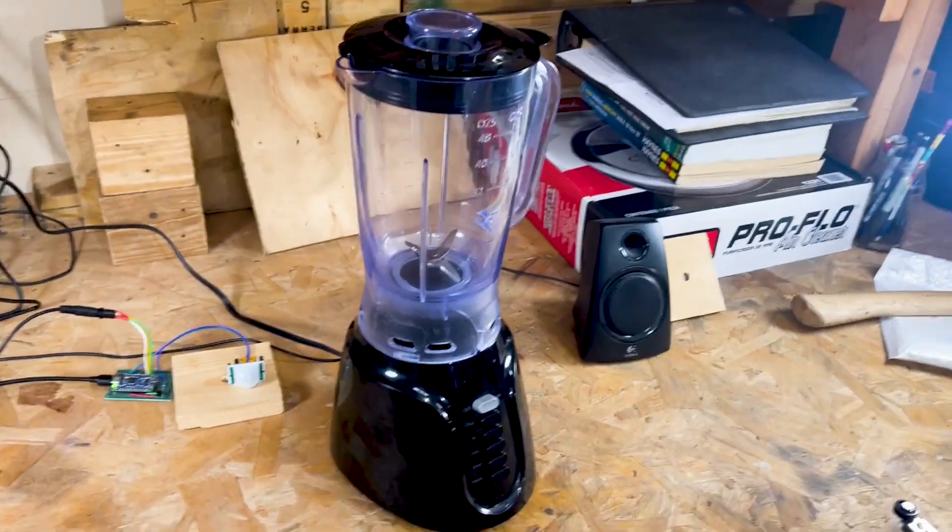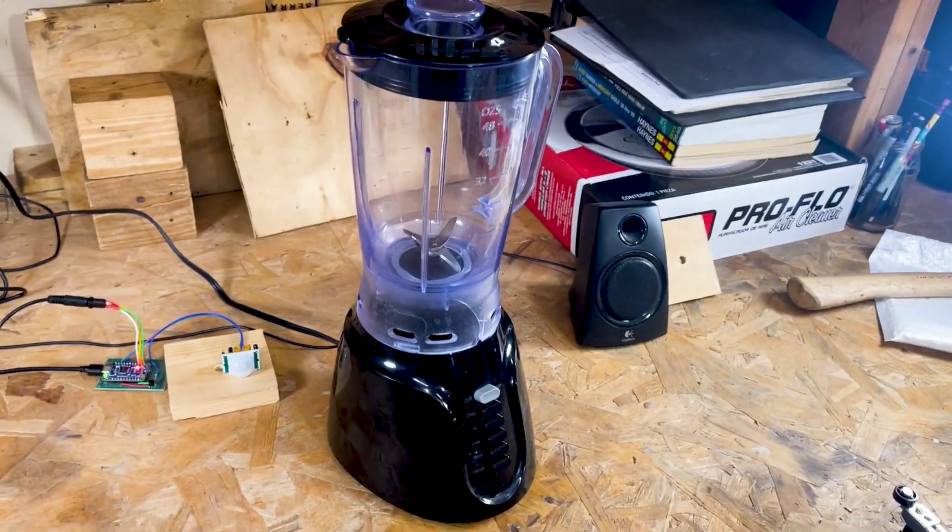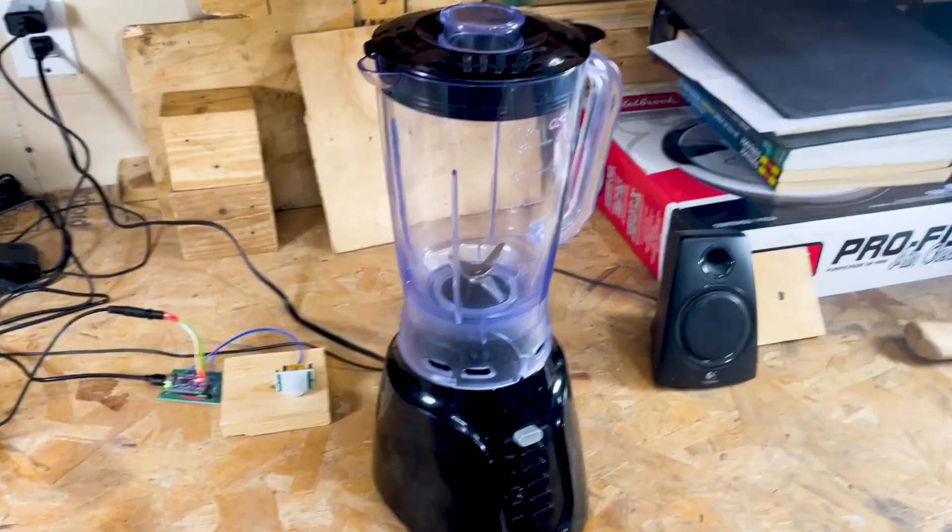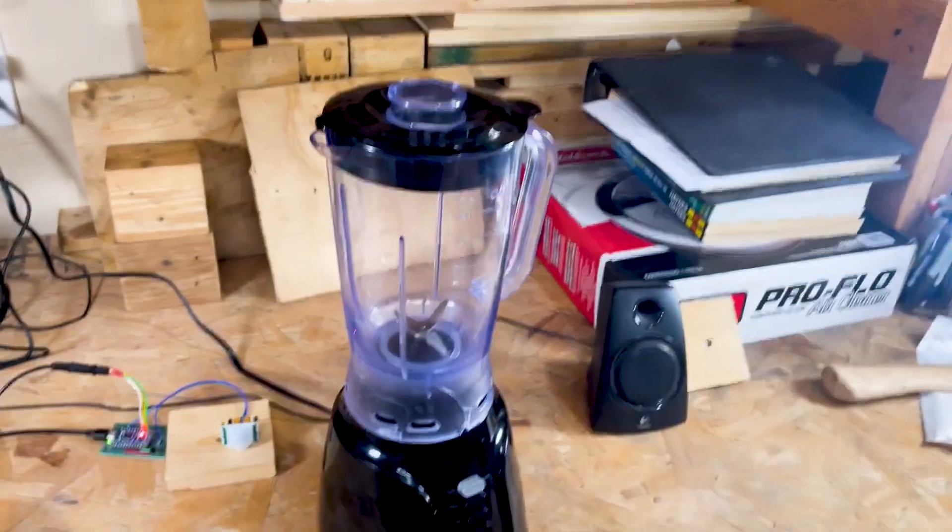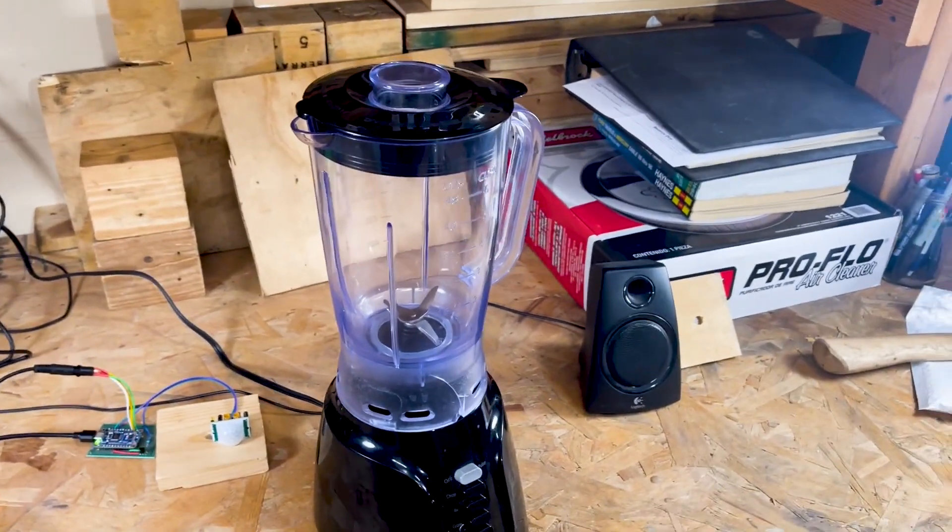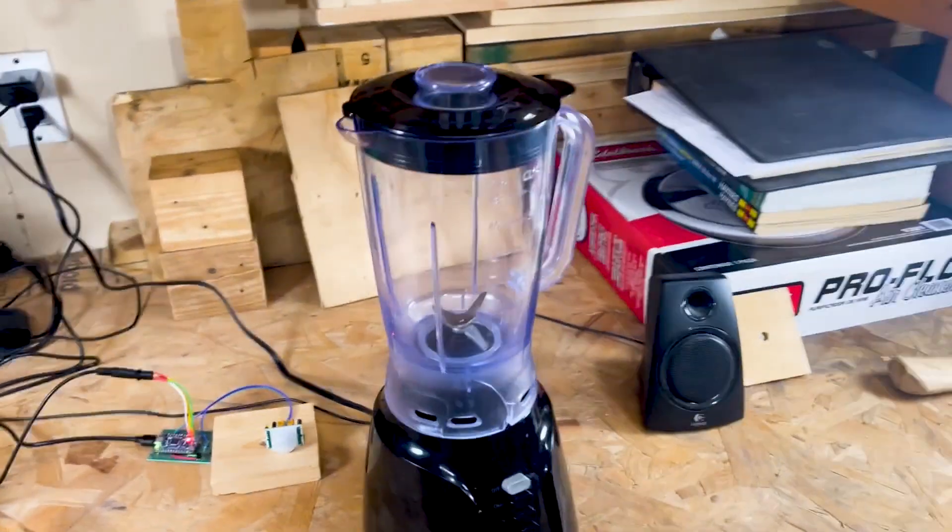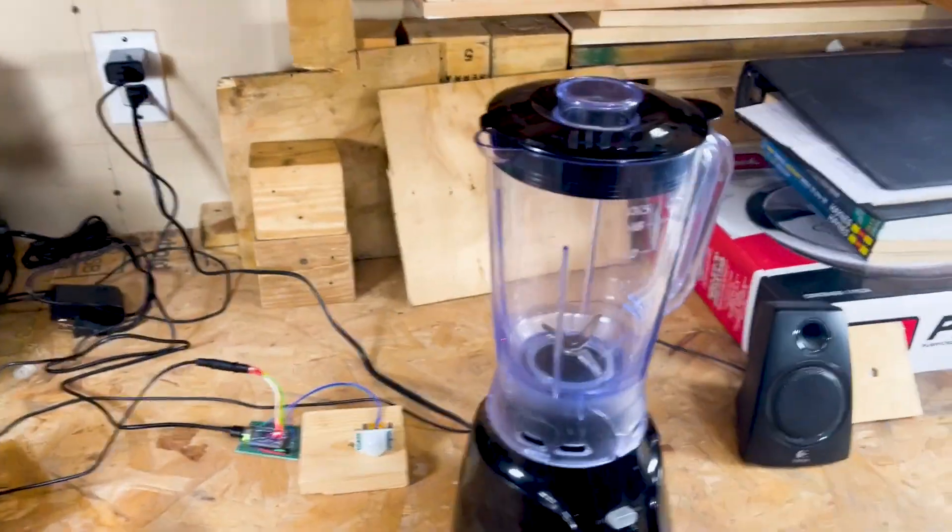All right, so at some point through the progression of the escape room, we have this blender, right? And there's a key in the blender, and you have to open a cabinet and get your hand in there to get the key out. Well, when you put your hand in there, you trip these little limit switches, and then it turns on.